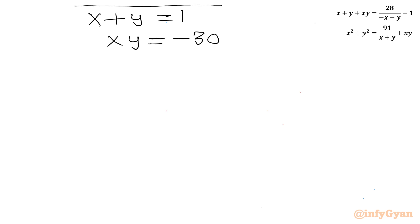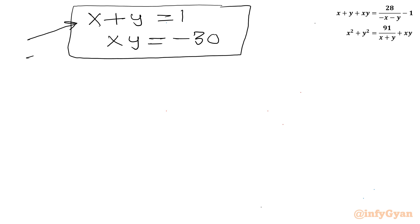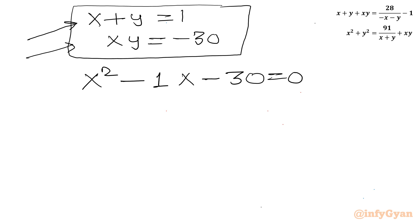Our system is now easy: x plus y equal to 1 and xy equal to negative 30. I consider a quadratic equation whose roots are x and y, with sum of roots 1 and product of roots negative 30. Framing the quadratic in x: x squared minus 1 times x plus negative 30 equal to 0, or x squared minus x minus 30 equal to 0.